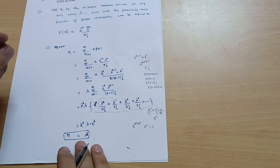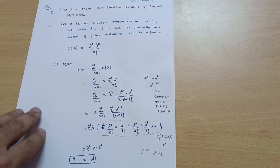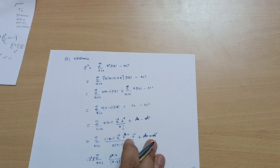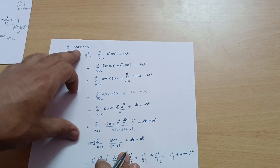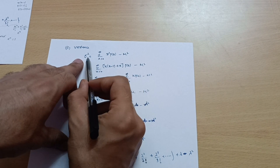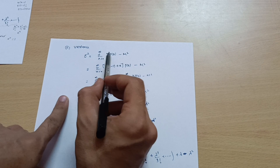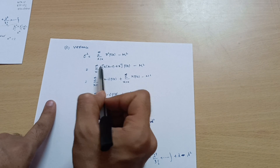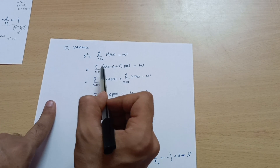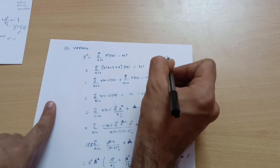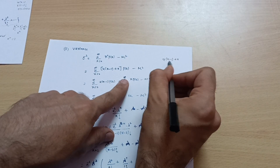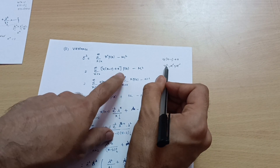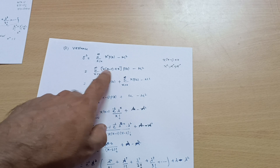Now we calculate the standard deviation. First we need the variance. The variance formula is: σ² = Σ (x=0 to ∞) x² · P(x) − μ². I make an extra step by writing x² = x(x−1) + x. You can verify: x(x−1) + x = x² − x + x = x².